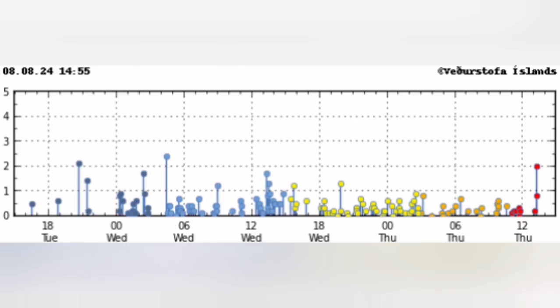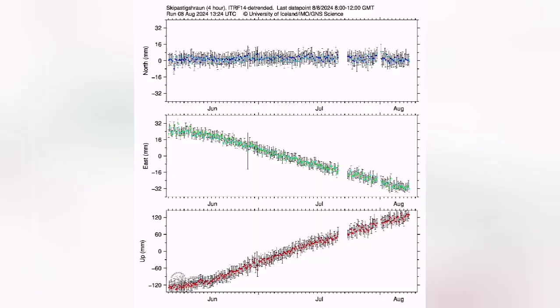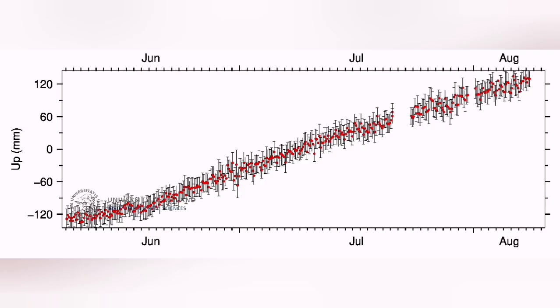This is a tiny earthquake, 0.2 magnitude, at the plate boundary or very close to it. We see that now we have around 140 millimeter rise in the Svartsengi and around 160 millimeter in the Sylingarfell. This may mean the imminent eruption.